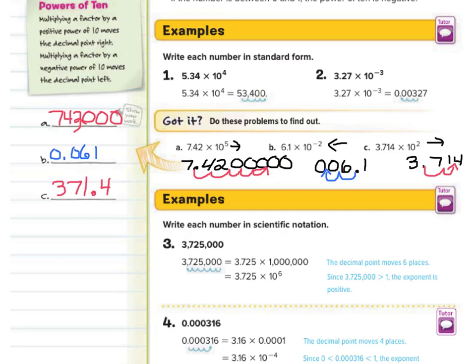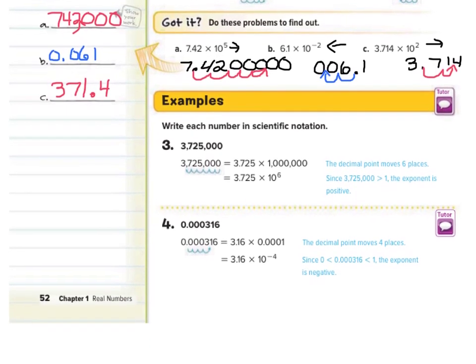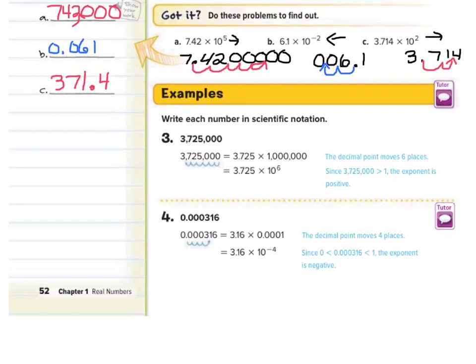That was going from scientific notation to standard form. Now, what if we want to go from standard form to scientific notation? Write each number in scientific notation for examples 3 and 4. In example 3, we have 3,725,000. Look where the decimal point is now and count 6 spots, ending up with 3.725 times 10 to the 6th. Since this number is larger than 1, we use a positive exponent.